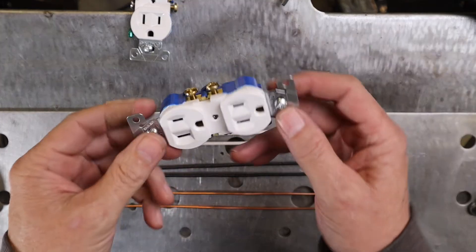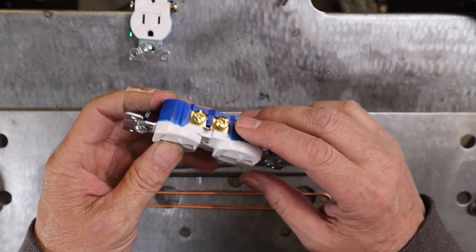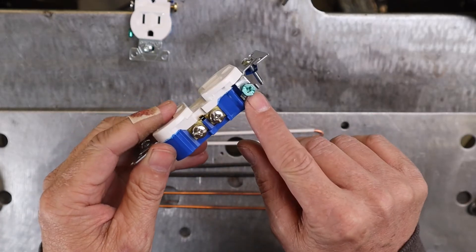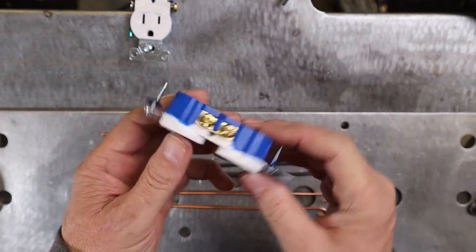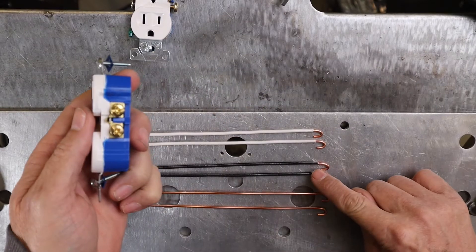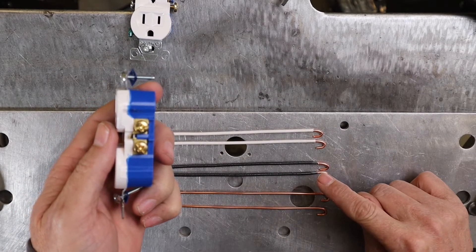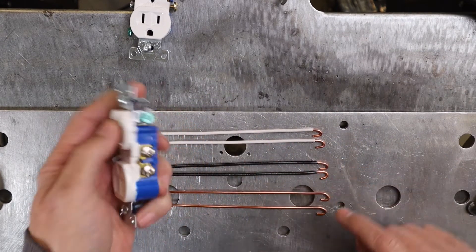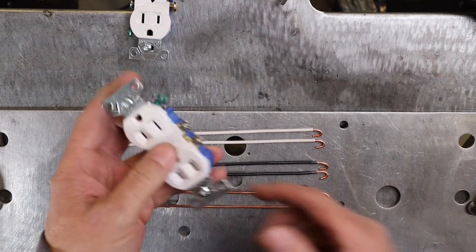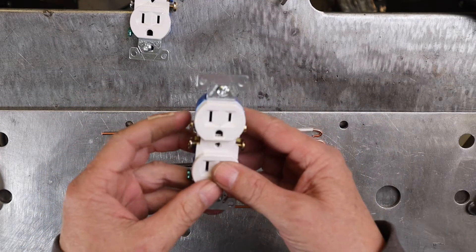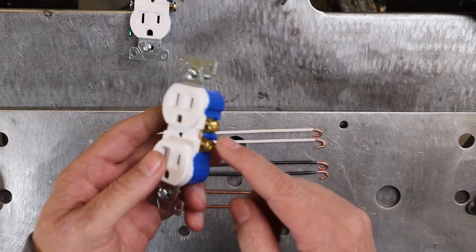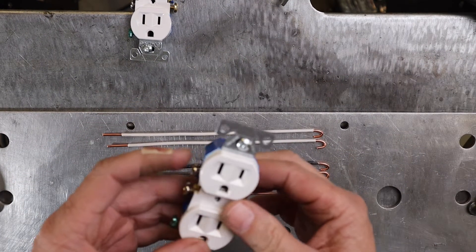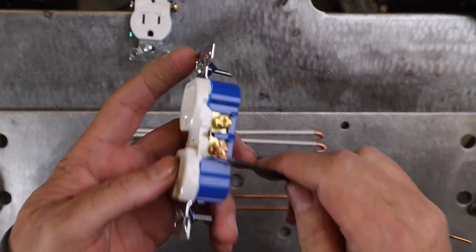The way these outlets work, you've got brass screws on one side and silver on the other, and then a green which is your ground. So brass is for black, which is the hot side. The silver is for the neutrals, the whites, and the green is the ground, which is the bare copper wire. So I'll just pick either top or bottom, it doesn't matter since they're both connected. I'll just go at the bottom, just make all mine the same.